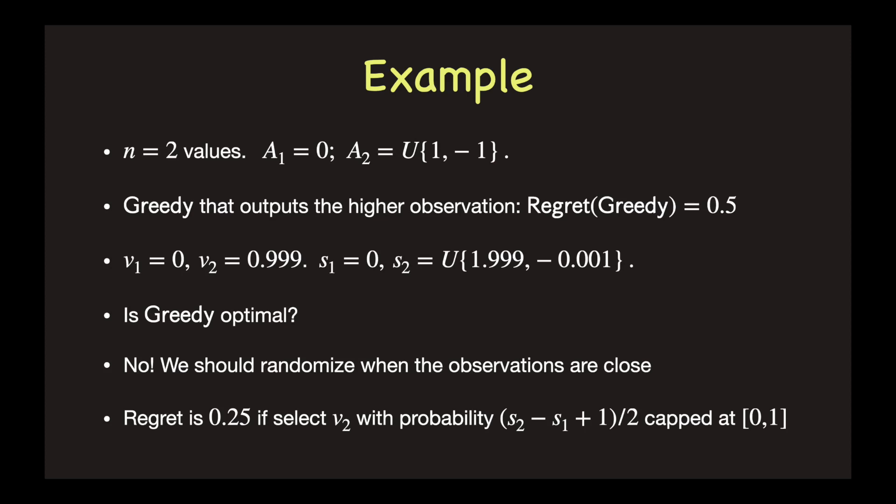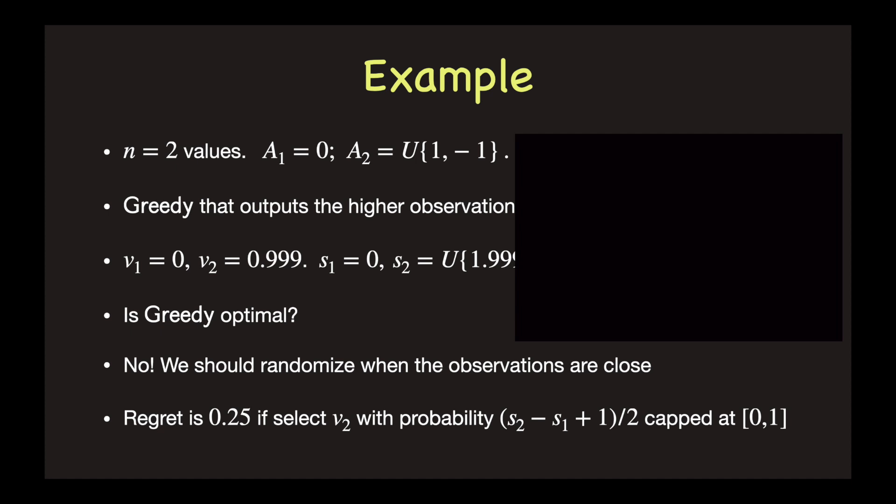To see why this is the case, consider the following algorithm, where we select v2 with probability (s2 minus s1 plus 1) over 2, capped at [0,1]. Suppose v2 minus v1 equals d, then we know s2 minus s1 is either d plus 1 or d minus 1 with equal probability.